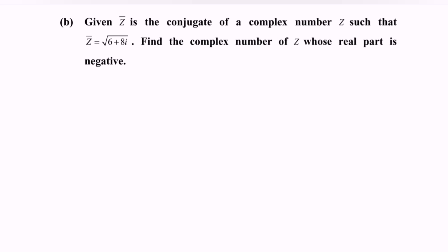So given z-bar is the conjugate of a complex number z, such that z-bar equals the square root of 6 plus 8i. Find the complex number z whose real part is negative.